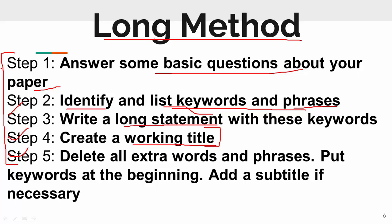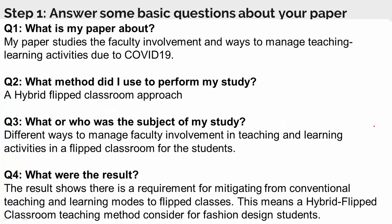I will explain all five steps one by one using a sample example. In step one, you have to answer some basic questions about your paper: What is my paper about? Which method did I use to perform my work? Who or what was the subject of my study? And what was the result obtained by my work?